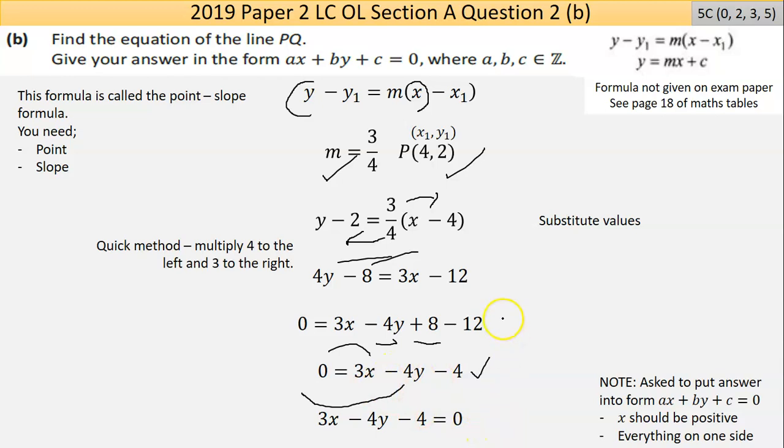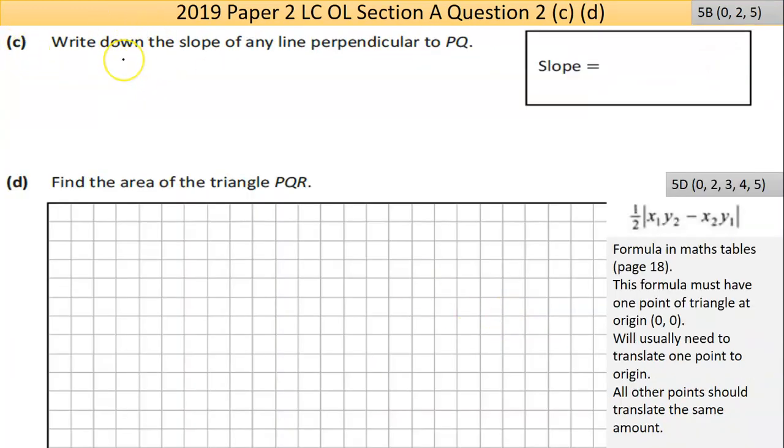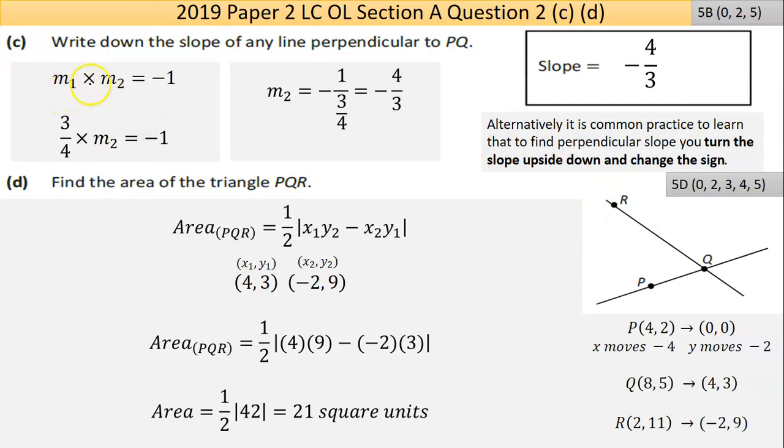Now part (c) says write down the slope of any line that's perpendicular to PQ. The word perpendicular is the important piece of information there. So our slope is 3 over 4. Now a perpendicular slope can be easily found by just turning the slope upside down and changing the sign in front of it. That's the answer here. You could also use the slope perpendicular slope formula: one slope times a perpendicular slope should multiply to give minus 1.